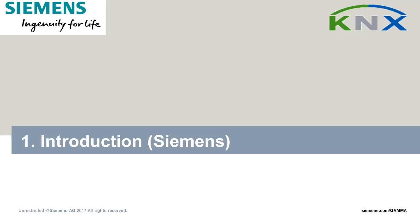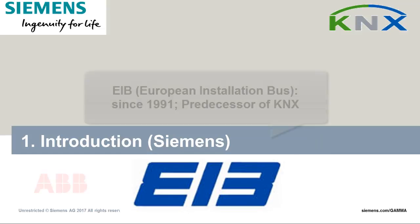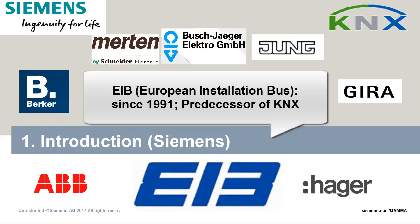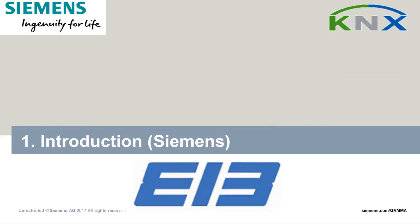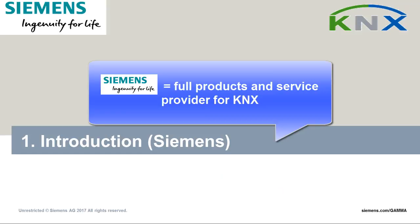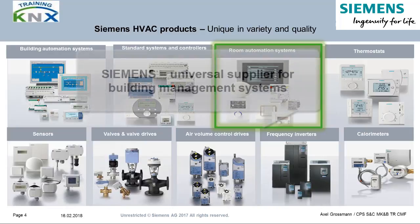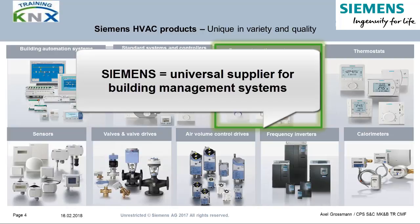The Siemens AG launched the system EIB on the market in 1991, together with seven other well-known suppliers from the electrical industry. Since that time, Siemens is a full service provider in the field of building system technology. Siemens has a comprehensive portfolio of products and systems in the fields of heating, ventilation, air conditioning and electrical installation, and can thus provide the complete technical equipment for a building. This covers switches and socket outlets, protection devices, and distribution boards up to building control.